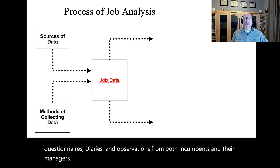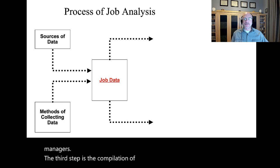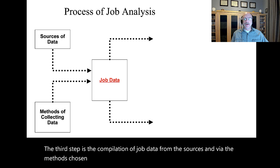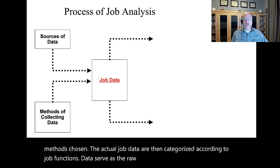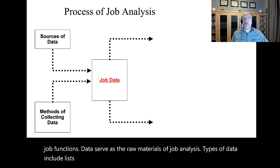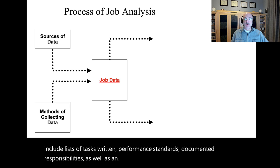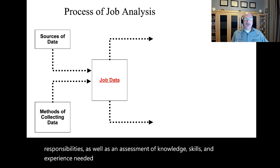The third step is the compilation of job data from the sources and via the methods chosen. The actual job data are then categorized according to job functions. Data serve as the raw materials of job analysis. Types of data include lists of tasks, written performance standards, documented responsibilities, assessment of knowledge, skills, and experience needed, plus documentation of job contacts, duties, and equipment needed.